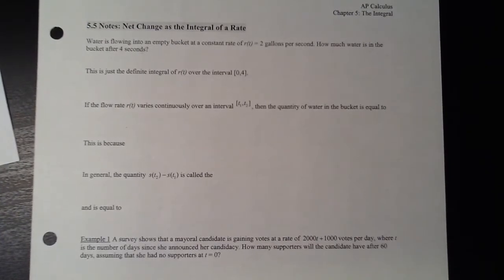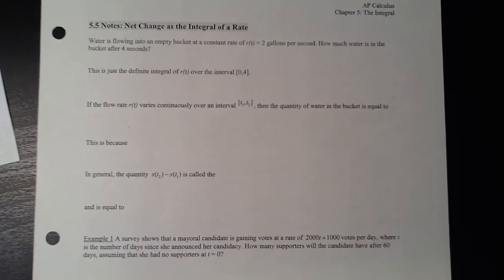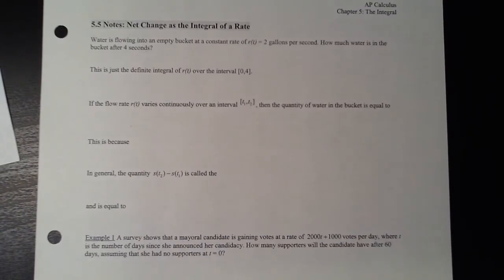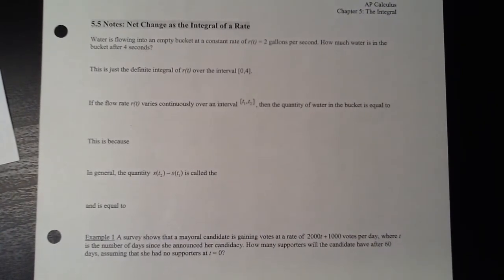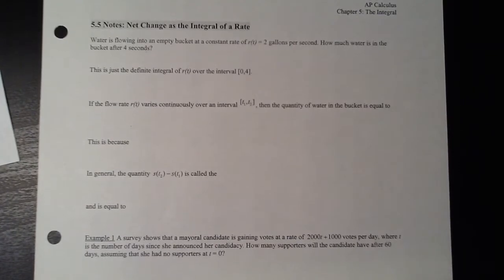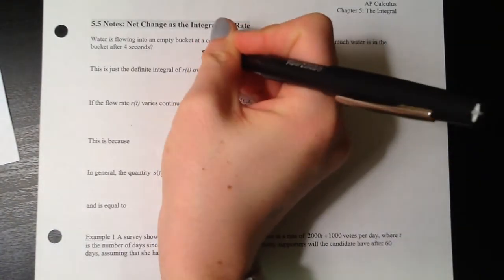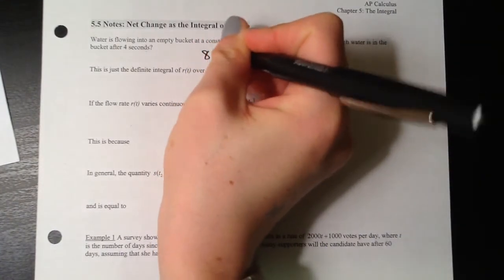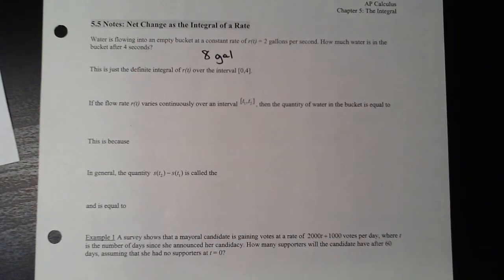I'm giving you a very easy one — it's like the velocity example I gave you when we started the chapter. It's purposely easy so we can set up what the graph would look like and model how we'd deal with similar situations when the rate isn't constant. We know for sure it's going to be 8 gallons — it's going in at 2 gallons per second for 4 seconds.